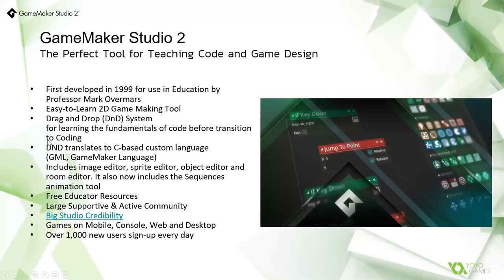GameMaker was first developed in 1999 for use in education by Professor Mark Overmars. It's a 2D game development tool, which is important because it removes much of the complexity associated with 3D games and allows for faster progress. There's drag and drop for learning the fundamentals, so you can understand the building blocks and then progress to coding when you're ready, and you're actually able to convert your drag and drop projects through to code as well.